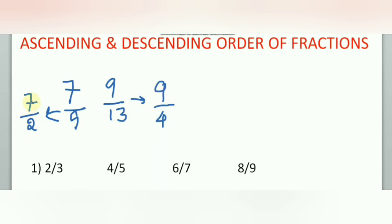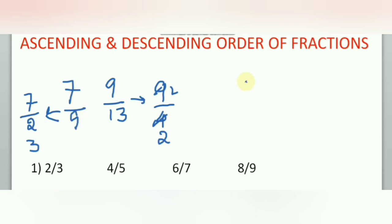Now compare 7 by 2 and 9 by 4. Divide: 7 by 2 — 2 threes are 6, so the perfect value is 3. For 9 by 4 — 4 twos are 8, so the perfect value is 2. Since 3 is higher than 2, 7 by 9 is the highest fraction. So 7 by 9 is greater than 9 by 13.